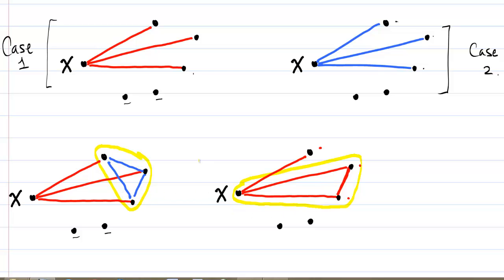So in either situation, in case one, we know there has to be a group of three mutual friends or three mutual enemies.